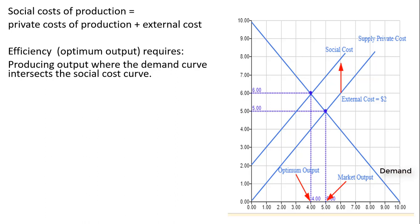To get the relevant cost of producing this item, we add $2 to the supply curve with the private cost. The supply curve shifts up by the amount of the external cost — $2. That gives us the social cost curve.